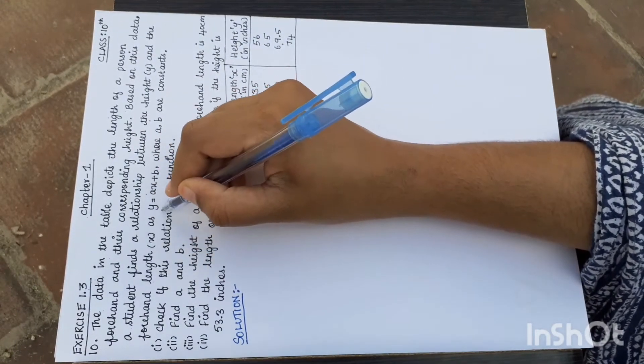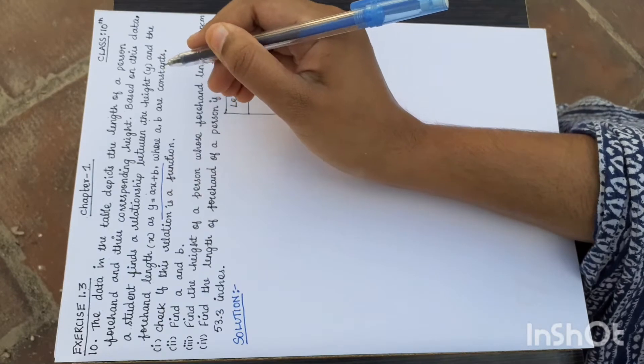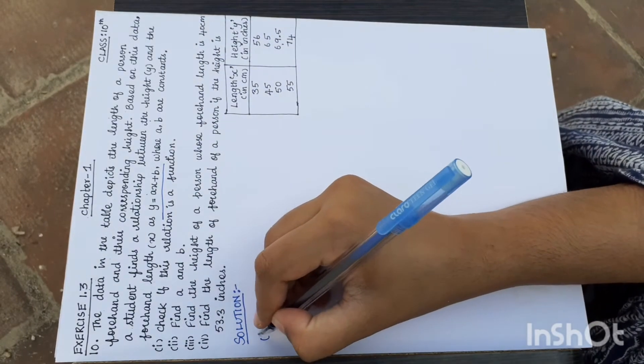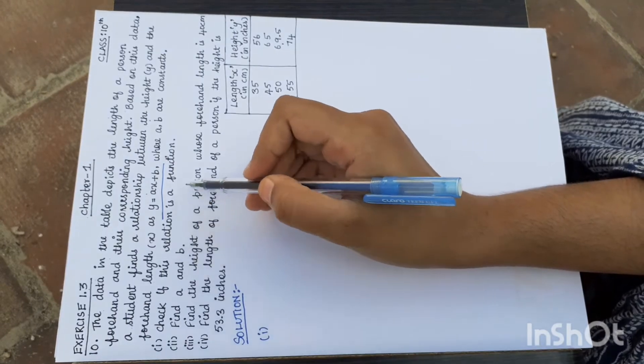Height to forehand length is there. y is equal to ax plus b, where a and b are constants. The first subdivision is to check if this relation is a function.